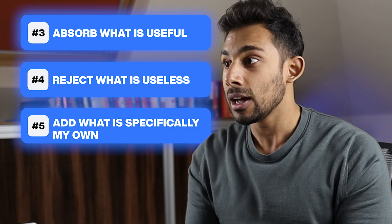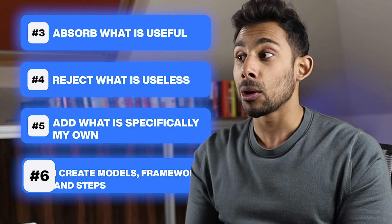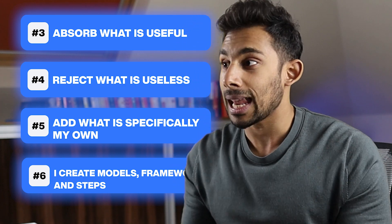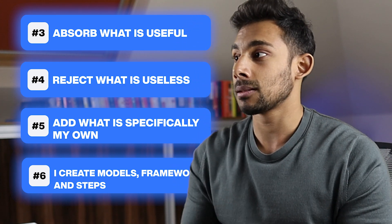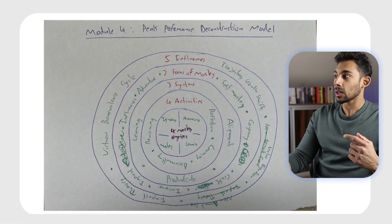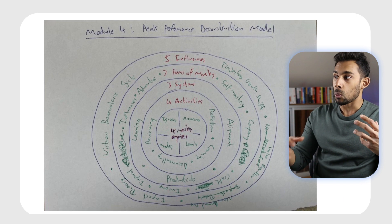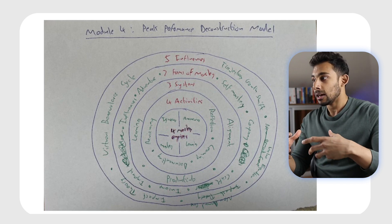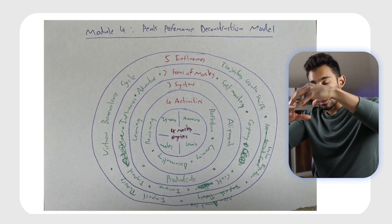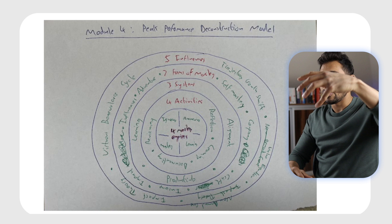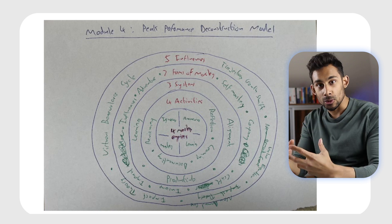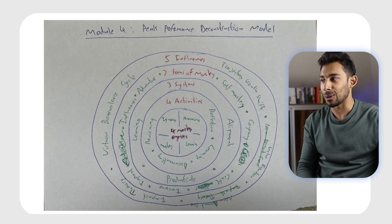Then I add specifically what is my own — that's step number five. Then I create models, frameworks, and steps. I'm going to take you through some of the modules, frameworks, and steps that I've created so you get an understanding of behind the scenes. You can see on the screen right now this is just one of the models I've created. It turns from a big paragraph of writing into models to make it easier to explain to you guys.